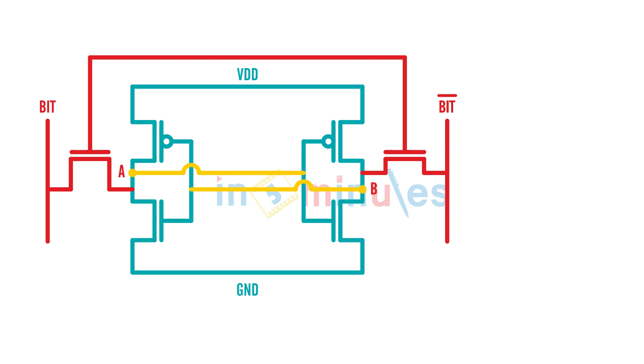So now what we have done is we have written a zero at B. How did we do that? By making N4 stronger than P2. Once there is a zero at B, this zero is going as an input here and this zero will ensure that P1 turns on and A will be pulled to logic 1.